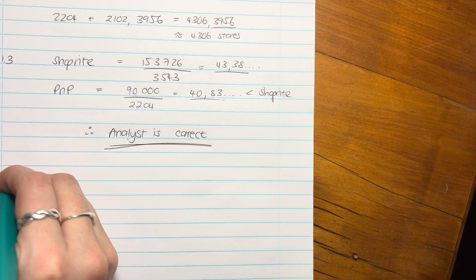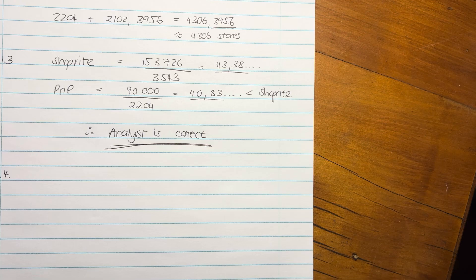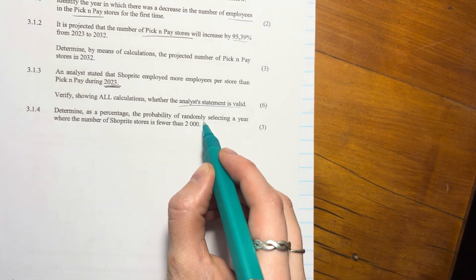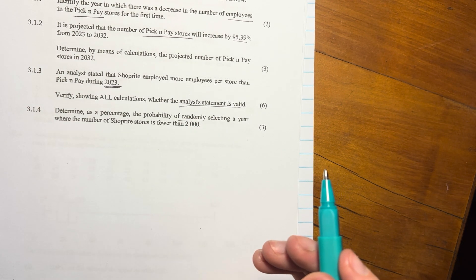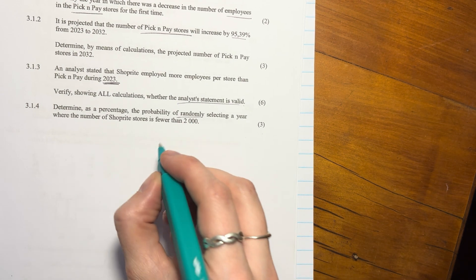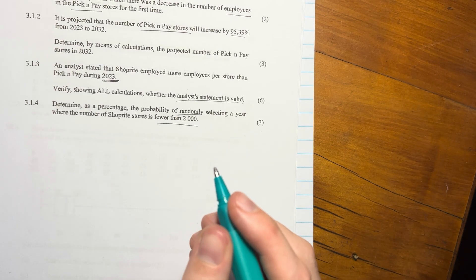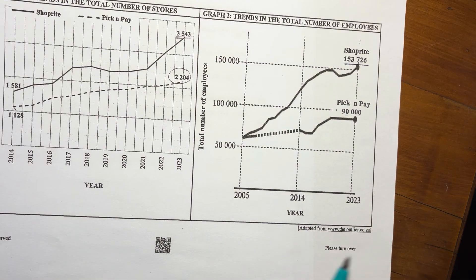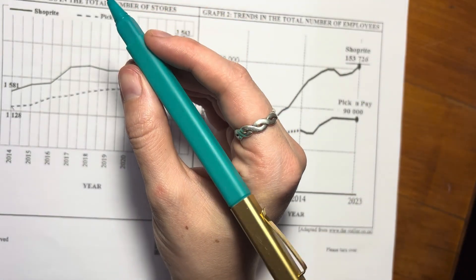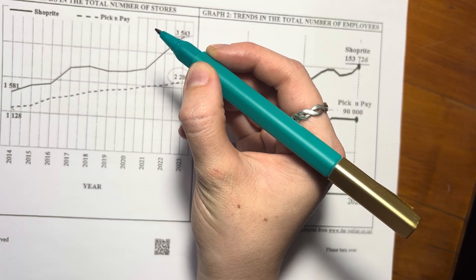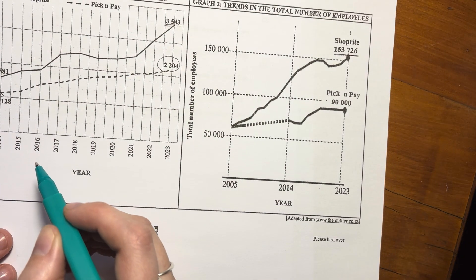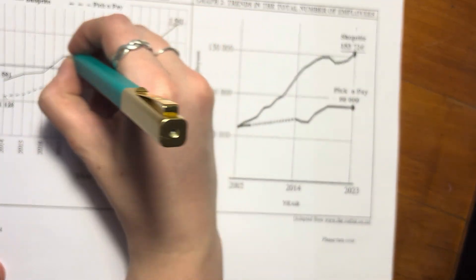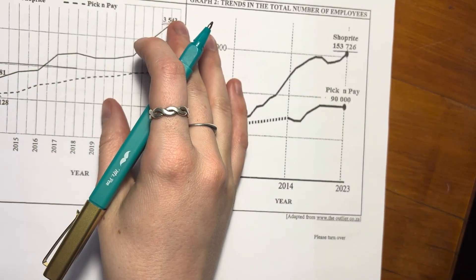3.1.4. Last question for this video. So determine, as a percentage, the probability of randomly selecting a year with a number of ShopRite stores fewer than 2,000. Yep, I'm reading numbers like I don't even know what numbers are these days. Okay, so if we look over here, we look at the number of stores, and we're looking at what's below 2,000. So it's basically what's below this line, but specifically for ShopRite, right? We don't care about Pick n Pay right now.